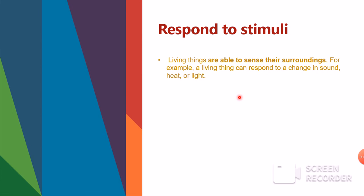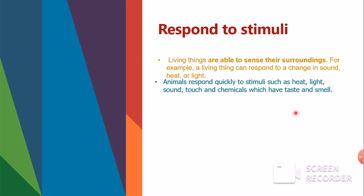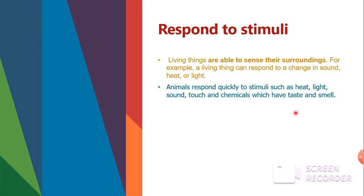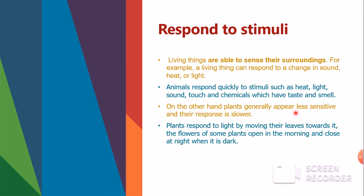The next life process is responding to stimuli. Living things are able to sense their surroundings. A living thing can respond to changes in sound, heat, or light — this is called sensitivity. When someone touches you, you feel it, meaning you are responding to stimuli. Animals respond quickly to stimuli such as heat, light, sound, touch, and chemicals that we taste and smell — our five senses. Plants also respond to stimuli, for example through tropism and phototropism. Plants respond to light by moving their leaves towards it, and some flowers open in the morning and close at night.